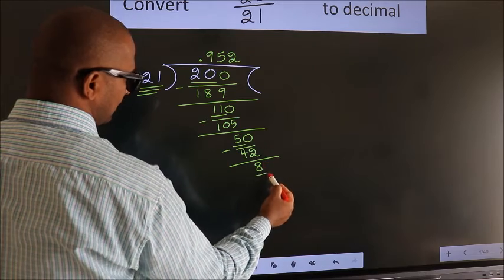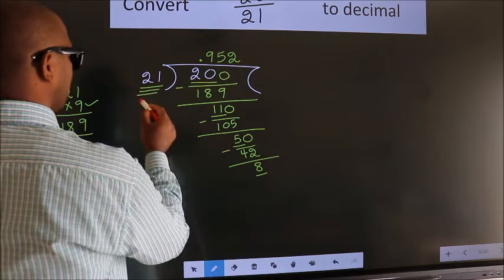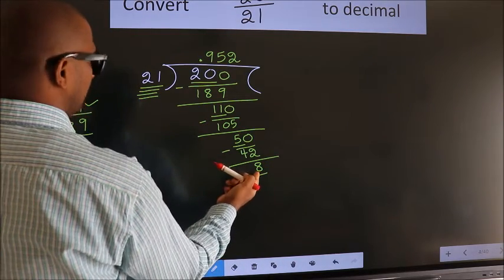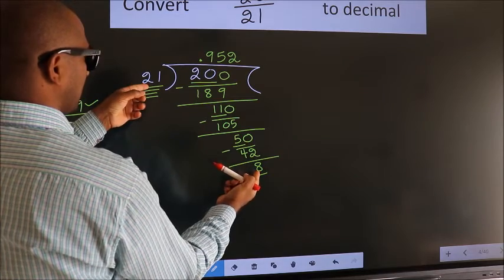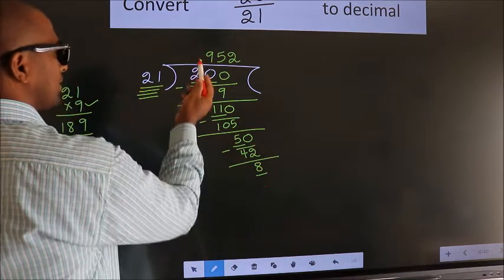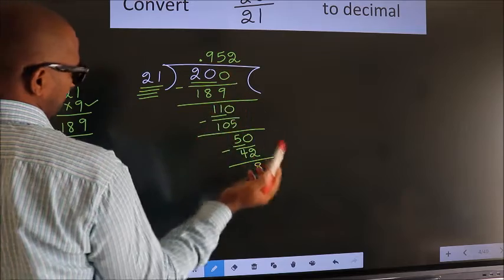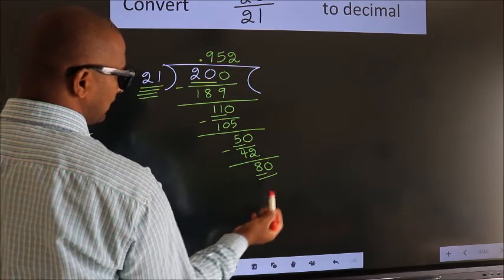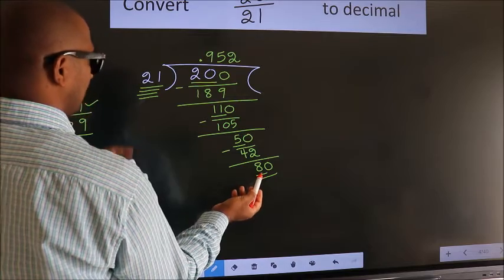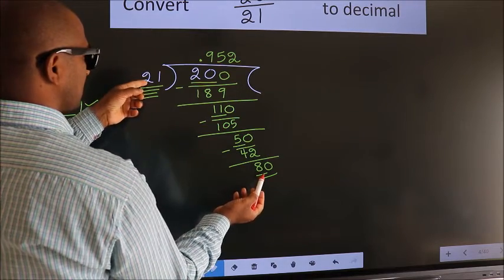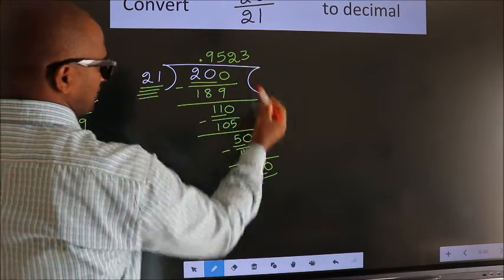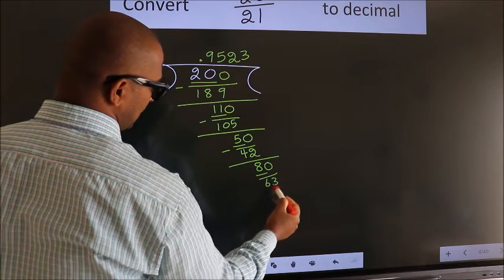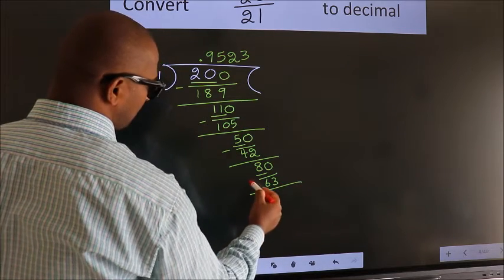We get 8. Here we have 8. Here 21. 8 smaller than 21. And we already have the decimal. So we can directly take 0. So 80. A number close to 80 in 21 table is, 21 3s, 63. Now we subtract.